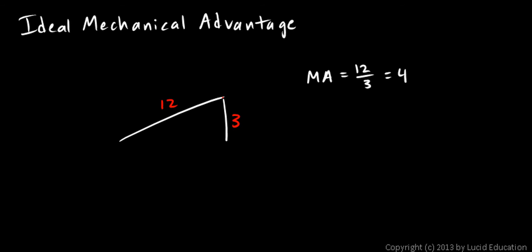That's really what we call the ideal mechanical advantage. And by ideal, that means the mechanical advantage that this ramp would give us if everything were perfect. And by perfect, we mean no friction.